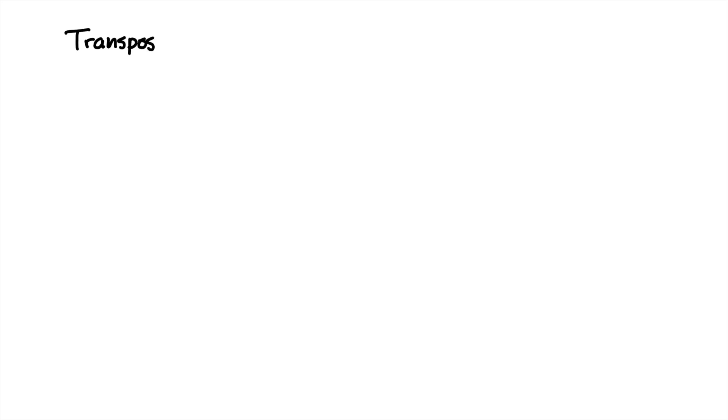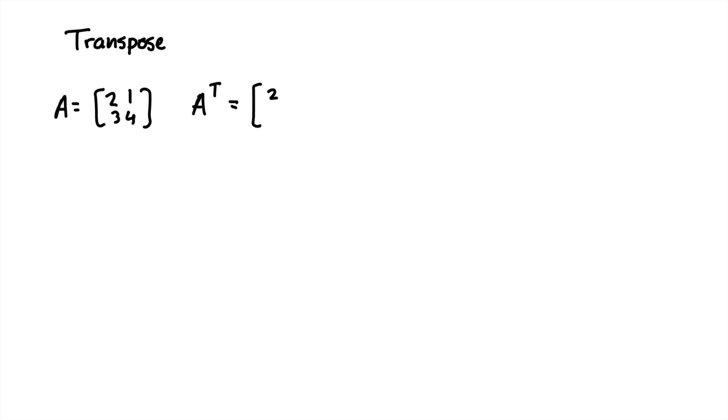Now for transpose. If you've never taken a linear algebra course, there's a good chance you've never heard this word before. All it means is that we're going to be turning a matrix — we're going to switch the rows of the matrix and make them the columns of another matrix. So if we have matrix A as two, one, three, four, and we take A transpose, written as A to the T power, we have two, one, three, four.